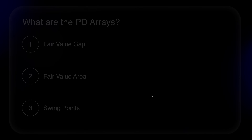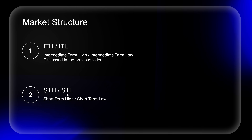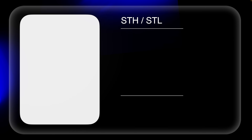Moving on, we need to discuss market structure. In the previous video we talked about intermediate term highs and intermediate term lows. Now we will revisit them but move on to short-term highs and short-term lows, and how they transfer over to order flow.